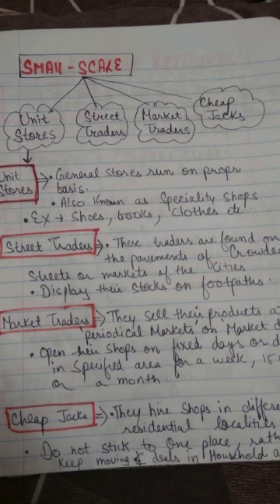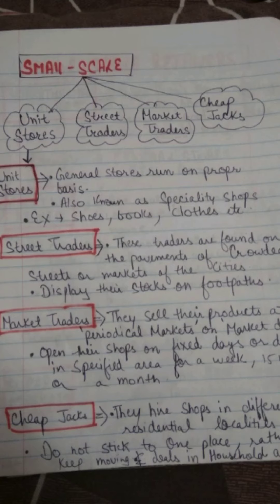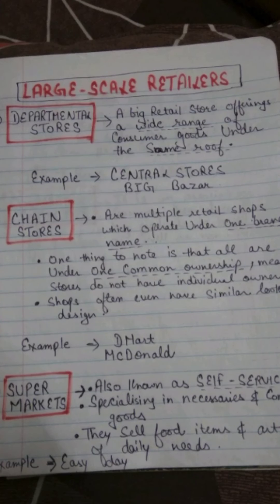Third are market traders — they sell their products at periodical markets or on fixed market days, meaning they operate on fixed days or fixed dates in a specified area, such as three days a week or once every 15 days or once a month. Fourth are cheap jacks — they hire shops in different residential localities and do not stick to one place; they keep moving and deal mostly in household articles, opening in one location and moving on once goods are sold.